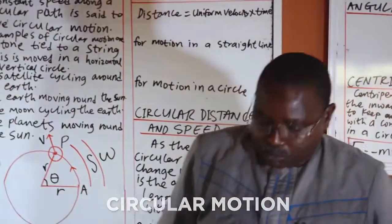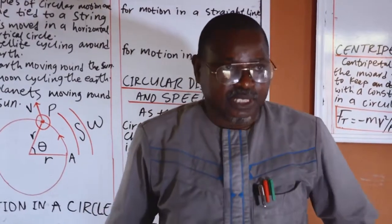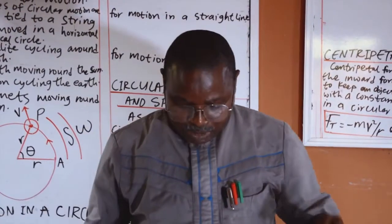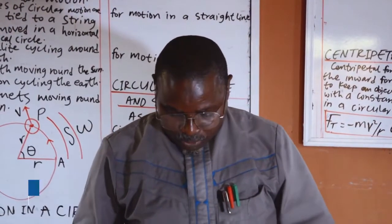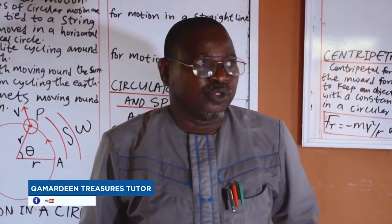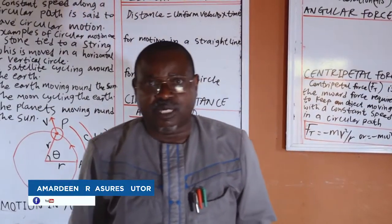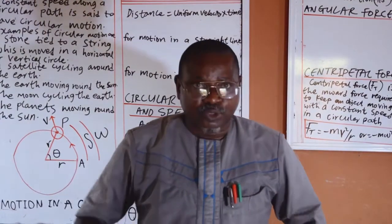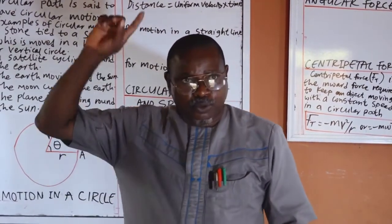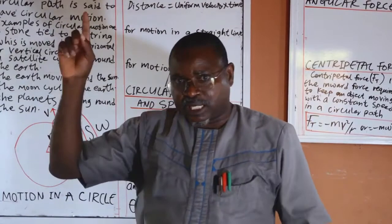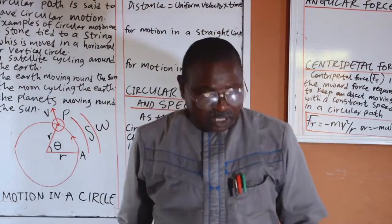An object moving with a constant speed along a circular path is said to have a uniform circular motion. Examples of circular motion are a stone tied to a string which moves in horizontal or vertical circle.